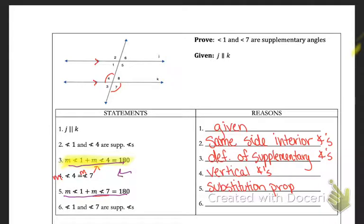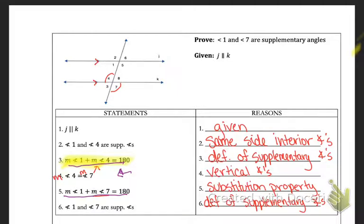Lastly, if the measures of the two angles add up to 180, then by the definition of supplementary, the two angles are supplementary because their sum is 180 degrees. All right, last example.